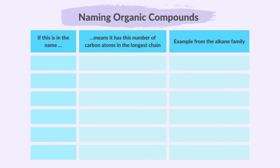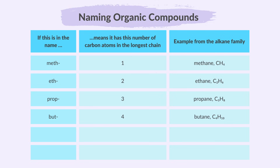We can identify the number of carbon atoms in the longest continuous chain of a compound if the chemical names include one of these parts. If the name contains meth, it has one carbon atom. If it has eth, it has two. If it has prop, it has three. If it has but, it has four. If it has pent, it has five. And if it has hex, it has six carbon atoms.